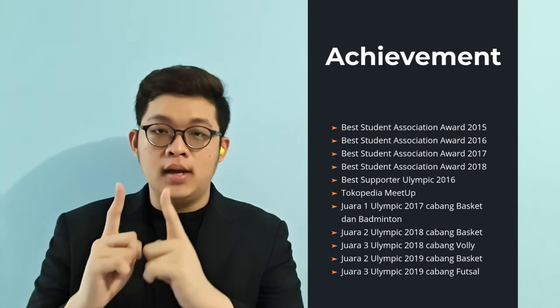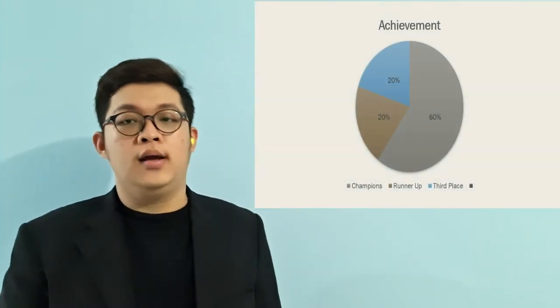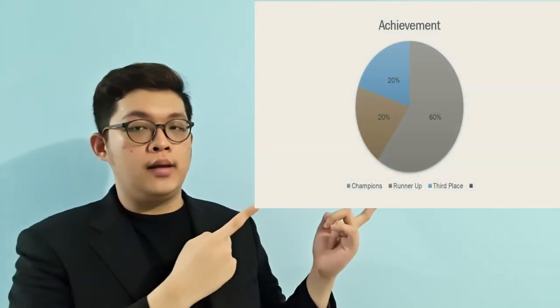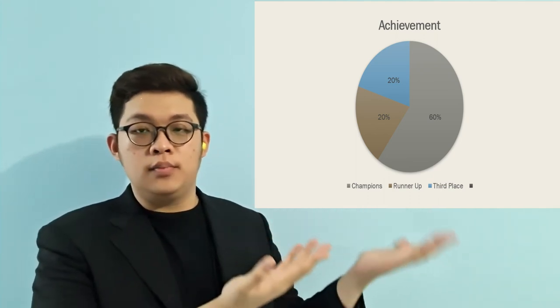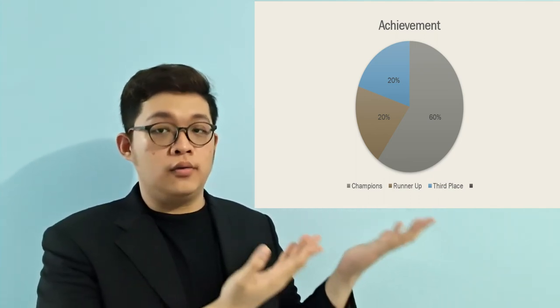Now let's talk about achievements. There are some HEMA achievements — 11 in total — and 10 of them were from competitions. Six times HEMA became the winner, two times runner-up, and two times third place. As you can see, I made a pie chart showing the percentage breakdown of HEMA's competition results.